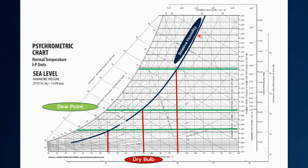Now as you can see, the relative humidity is the same value for all these three points, but the moisture content is vastly different from point one to three. That's why dew point is a much better way to measure the actual humidity that's in the air.